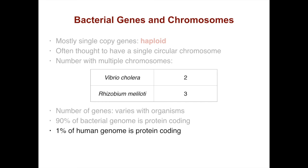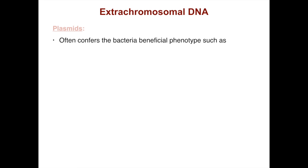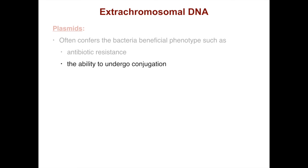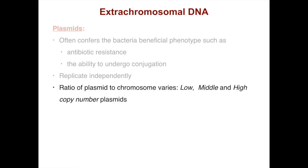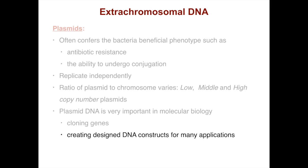Beyond their usually single chromosome, bacteria can also have extra-chromosomal DNA called plasmids. These often confer beneficial phenotypes upon the bacteria, such as antibiotic resistance or the ability to undergo conjugation. Plasmids replicate independently and the ratio of plasmid to chromosome varies — there are low, middle, and high copy number plasmids. Plasmid DNA is very important in molecular biology; it's used to clone genes and to create designed DNA constructs for applications such as cell culture or transgenesis.